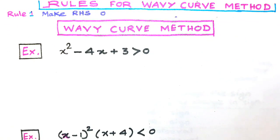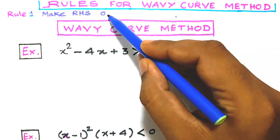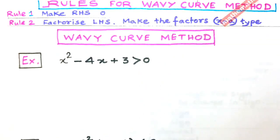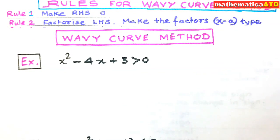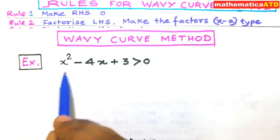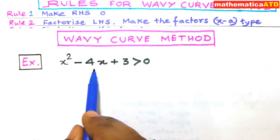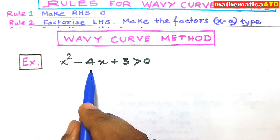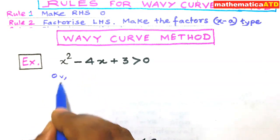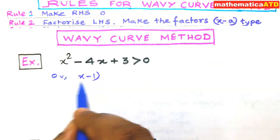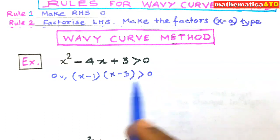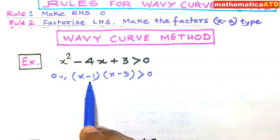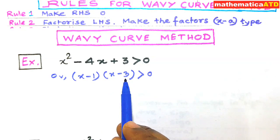It is used to solve inequalities. The first rule is: make the RHS equal to 0. The second rule: factorize the LHS and make the factors x-minus-a type. For example, in our first example, x² - 4x + 3 is factorized as (x - 1)(x - 3), which is greater than 0. So all the factors are of the form x minus a.